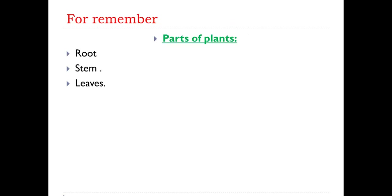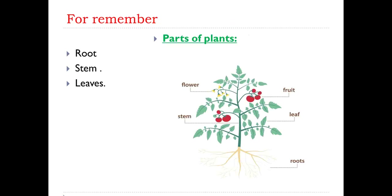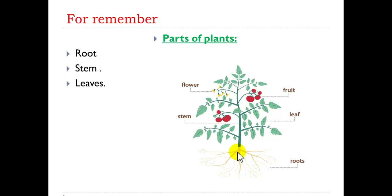For review, parts of plants. Plants consist of three main parts: root, which is under the soil, stem, and leaves.